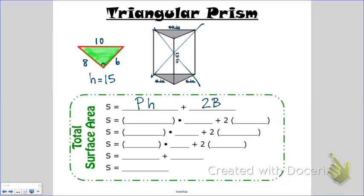As with lateral surface area, big P stands for perimeter of the base, and H is the height of the prism. Big B is the area of the base. So we have perimeter of the base times height of the prism plus two times the area of the base.